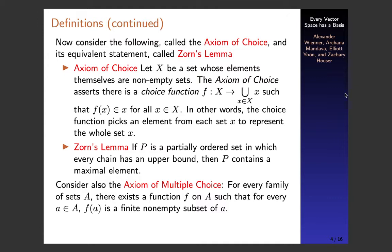Now we get to talk about the Axiom of Choice and its equivalent statement called Zorn's Lemma, which we'll use more often in this proof. The Axiom of Choice shows that a choice function exists: if you have a collection of sets, you can choose one element from each set to represent that whole set. Zorn's Lemma states that if P is a partially ordered set in which every chain has an upper bound, then P also contains a maximal element.